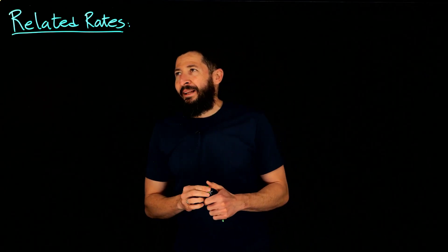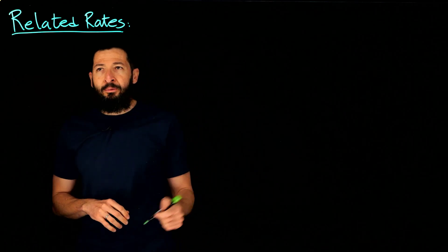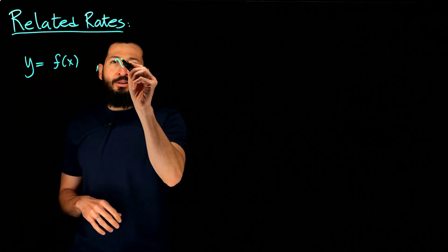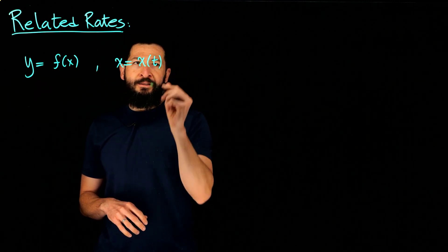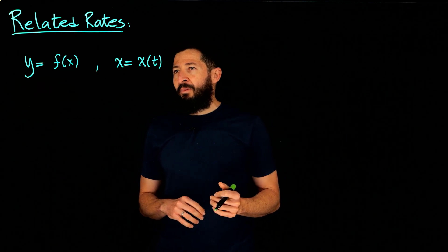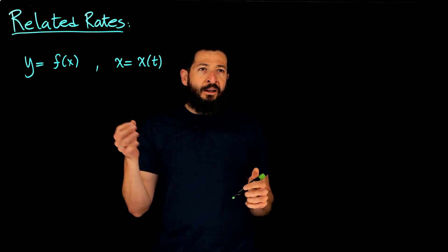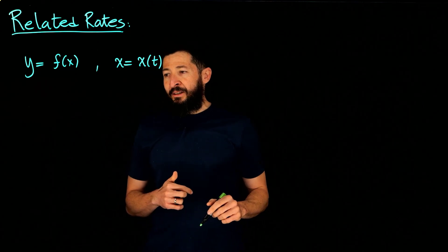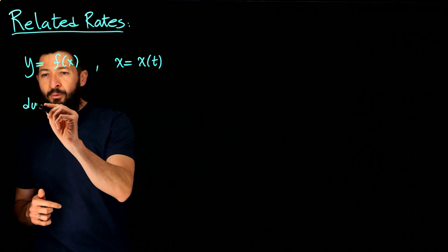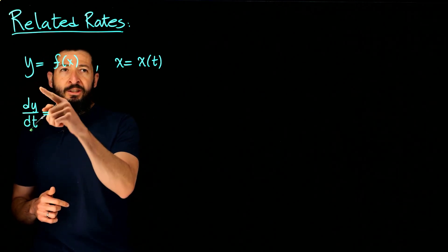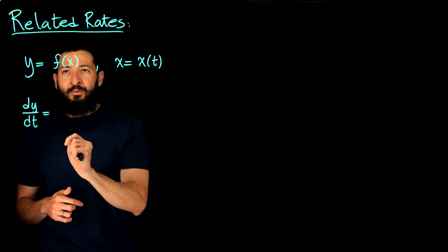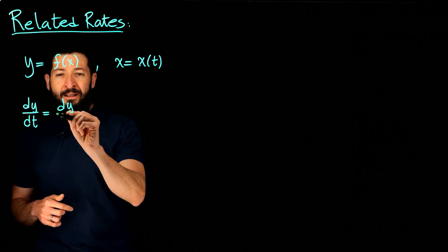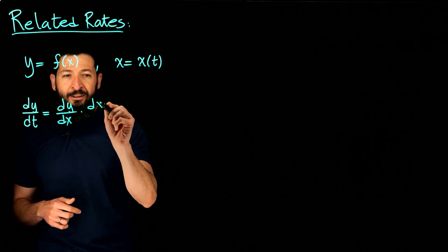Today we're going to talk about related rates. Let me remind you of the chain rule. Imagine that Y is a function of X, but X is also a function of T, or time, as is usually the case when you're doing physical phenomena. You have Y as a function of position X, and X itself is a function of time. So whenever you take the derivative dy with respect to time, you get dy/dx times dx/dt.